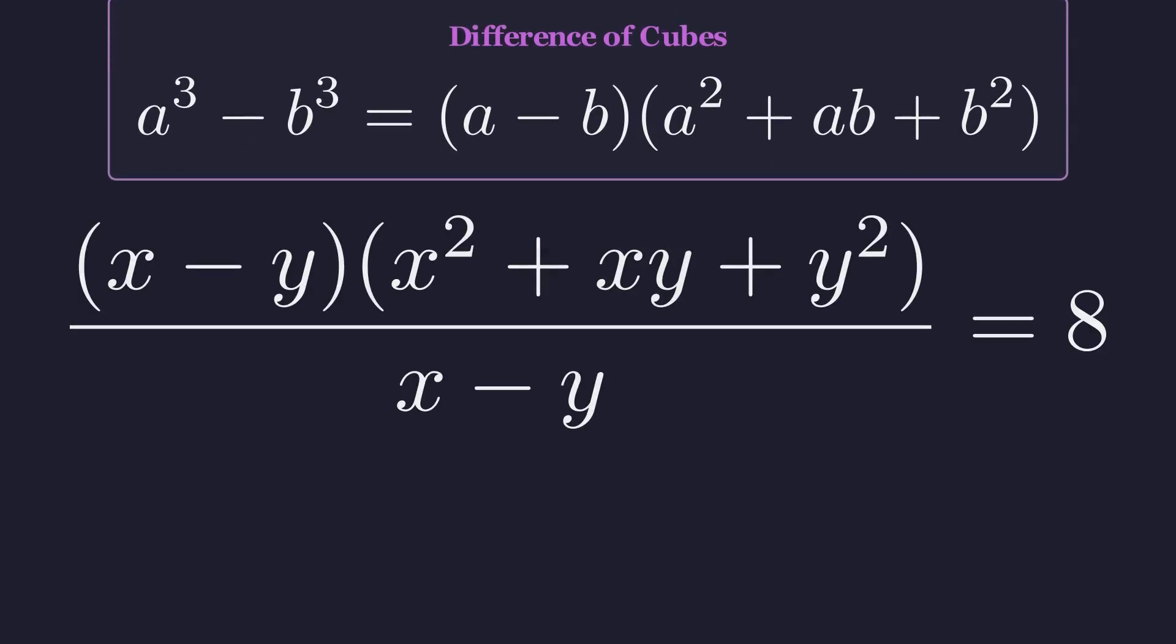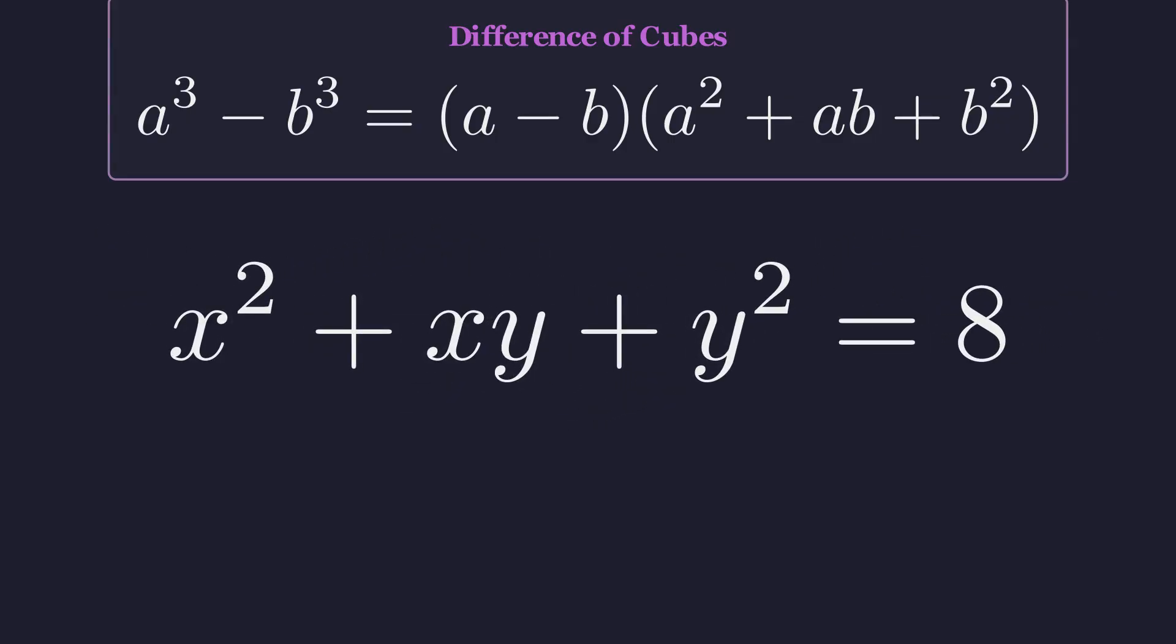we get this factored form. Notice that x minus y appears in both the numerator and denominator. They cancel out, and we're left with something much cleaner.